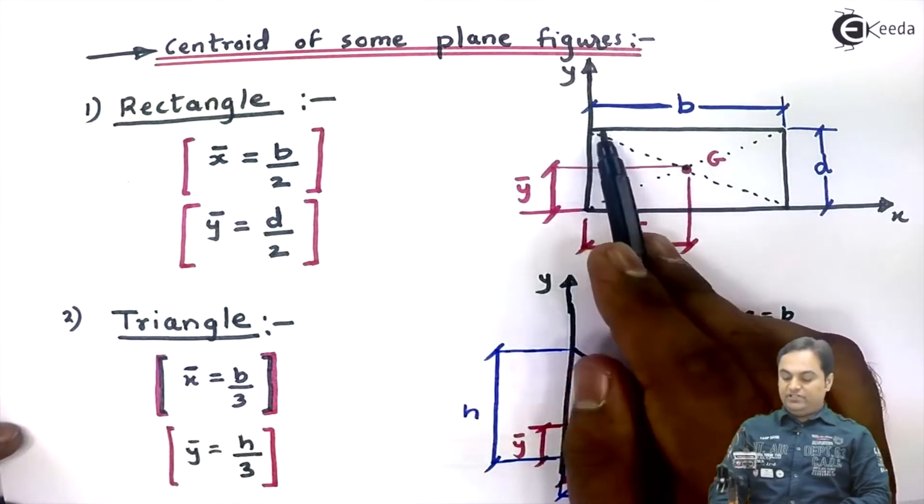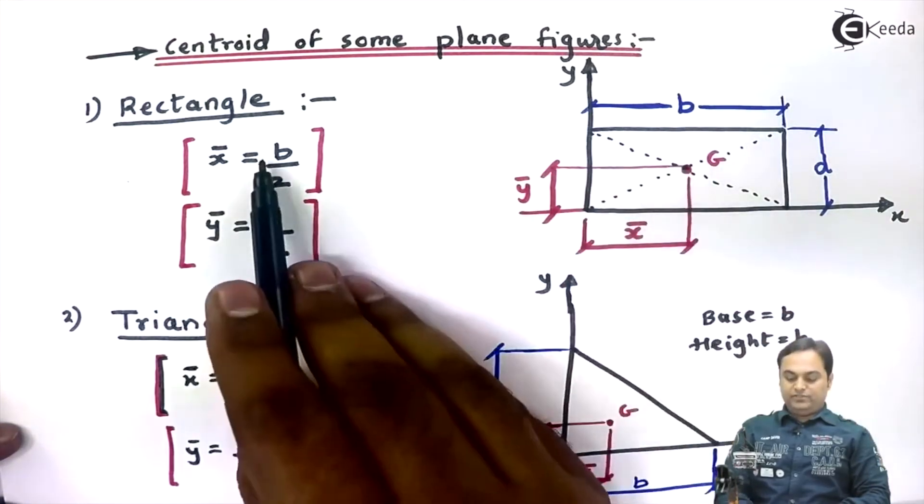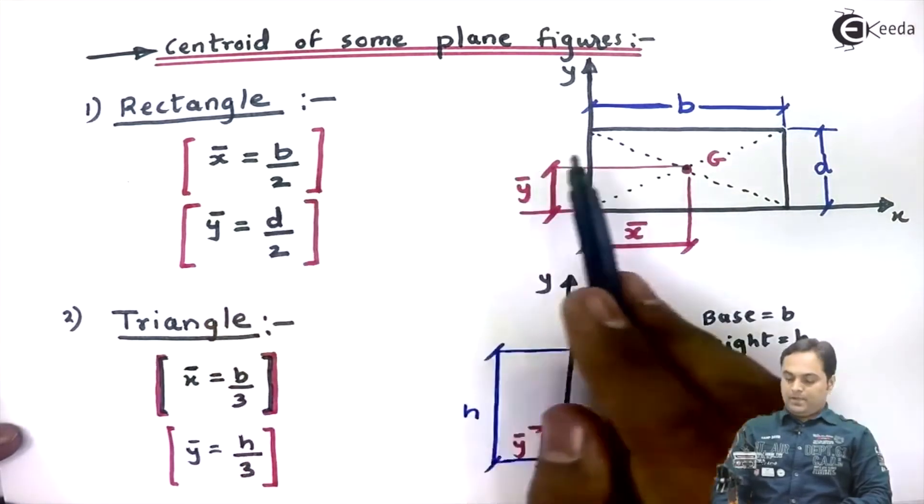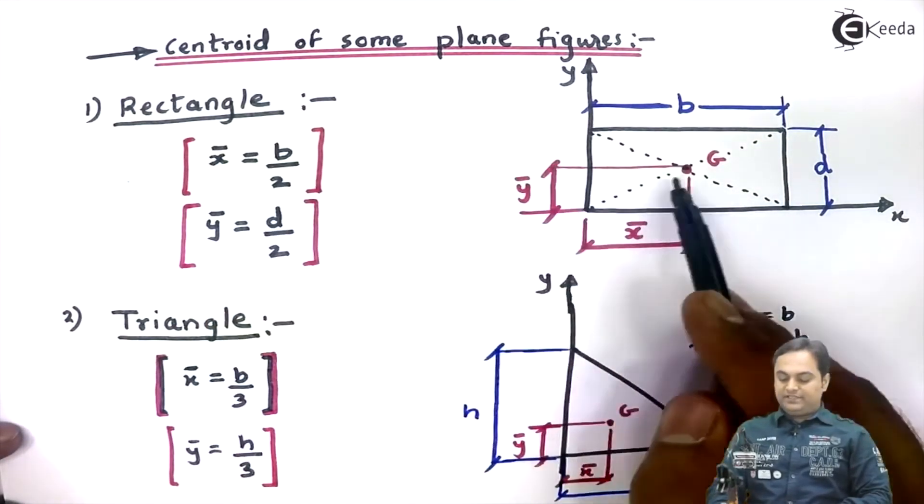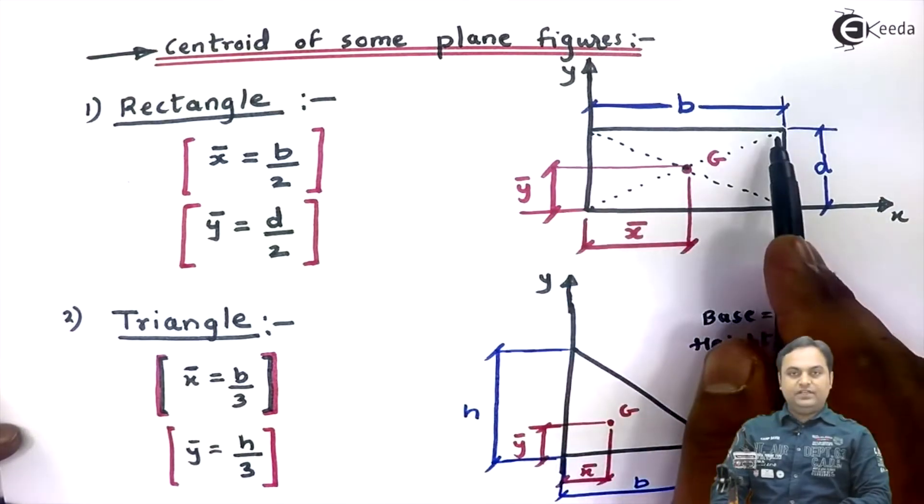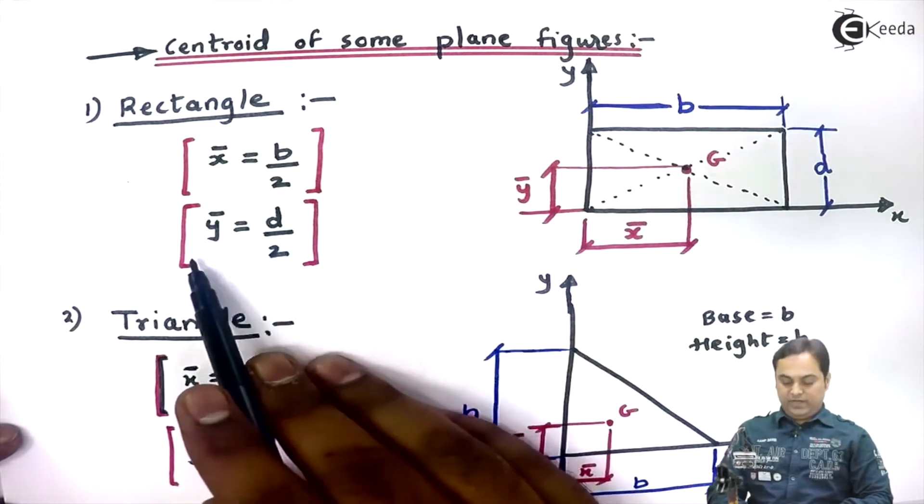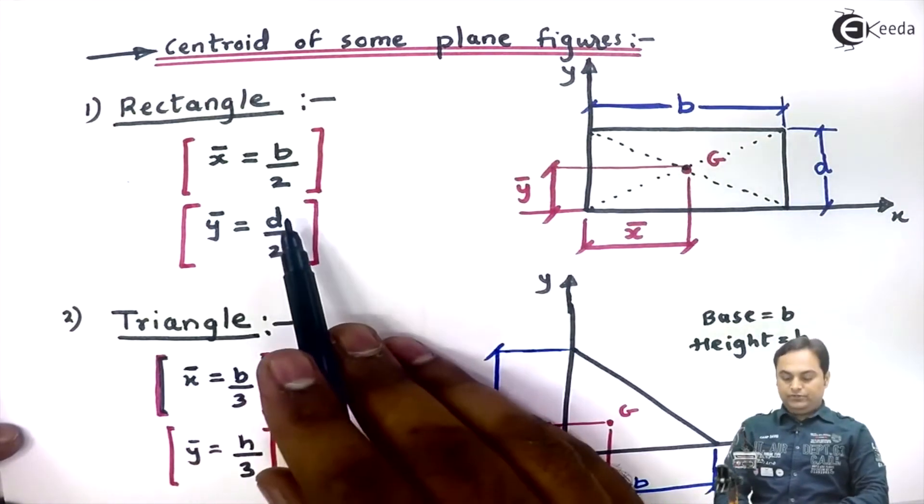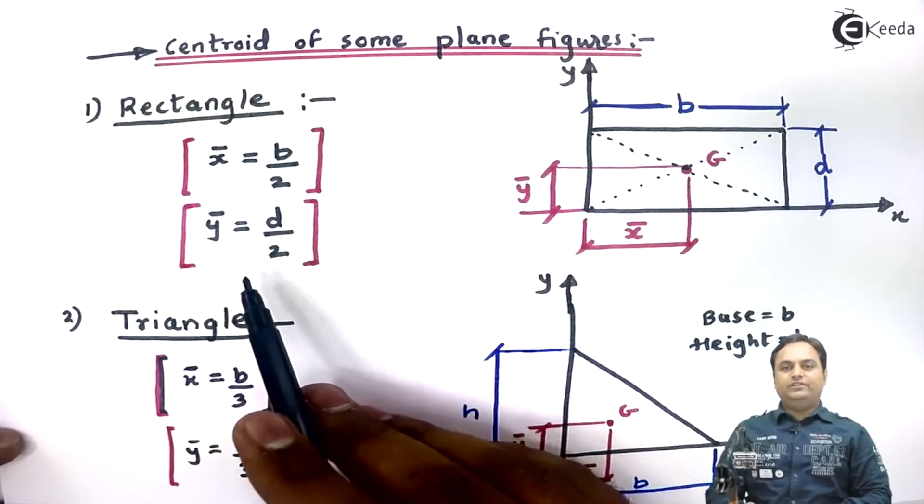So x̄ is B by 2. ȳ is the distance of centroid with respect to x-axis. Height is D, so ȳ is half of that, so ȳ is D by 2.